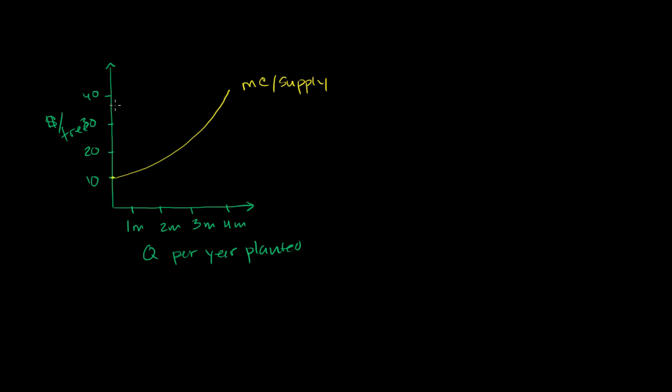And then our demand curve, that very first tree, someone's going to get a huge benefit from it. And then each incremental tree, people might get a little bit lower and lower benefits. So it might look something like this. Our demand curve will look like that. Demand. And this is the market for a certain nice tree.